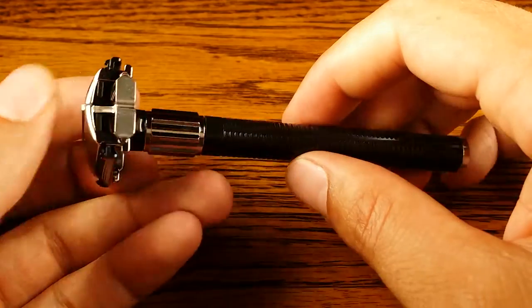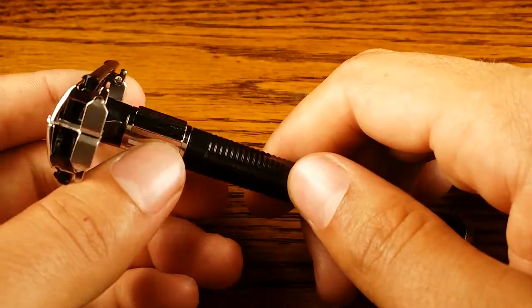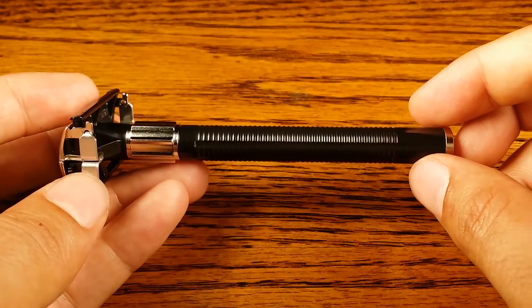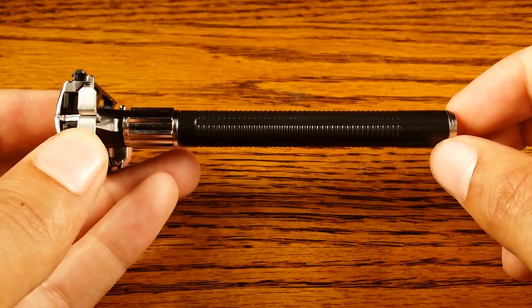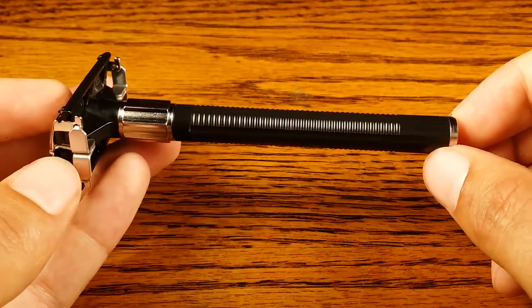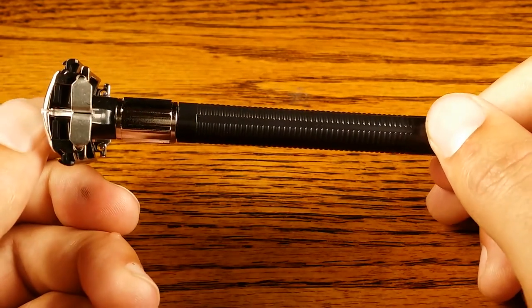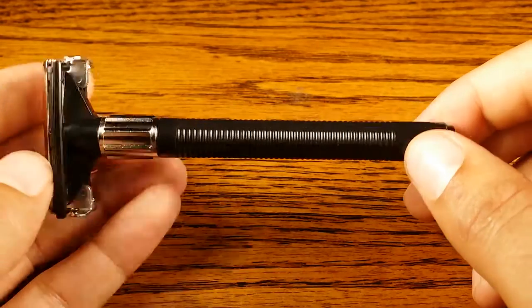Let's talk about the length. Something I noticed with really cheap safety razors such as this one is that they're all really long. Most of them are, besides like the Weishi. A lot of the other ten dollar safety razors are really long, which is interesting.